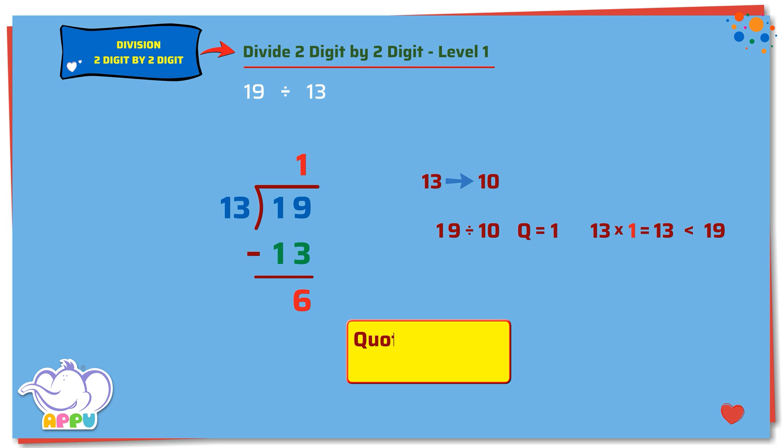So, the quotient is 1 and the remainder is 6. Fine!